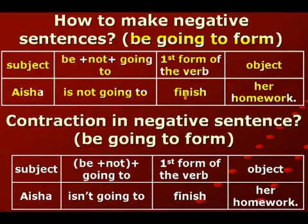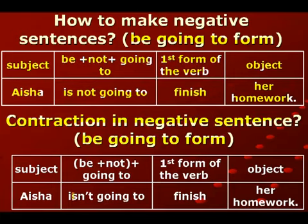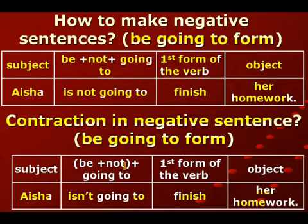نتغير نفس الجملة إلى جملة مختصرة - contraction في negative sentence. فالجملة بعد الاختصار بتكون: Aysha isn't going to finish her homework. في هاي الجملة جمعنا الـ be اللي عندنا is مع not مع بعض فأصبحت كلمة وحدة اللي هي isn't، وباقي الجملة نفس الشي.